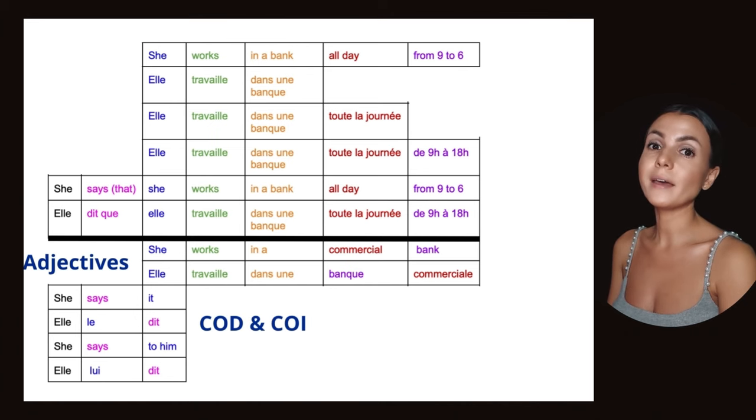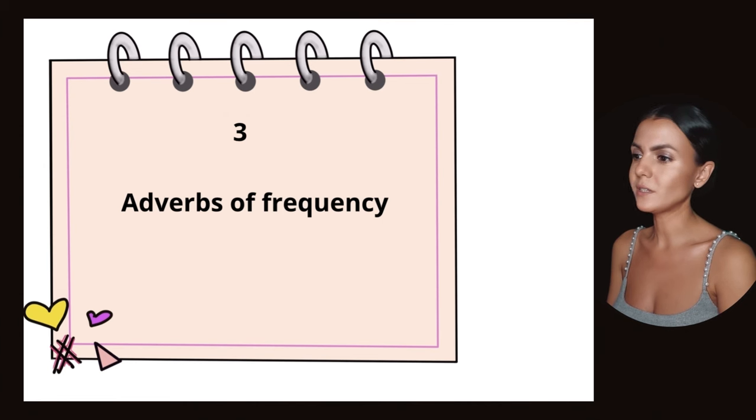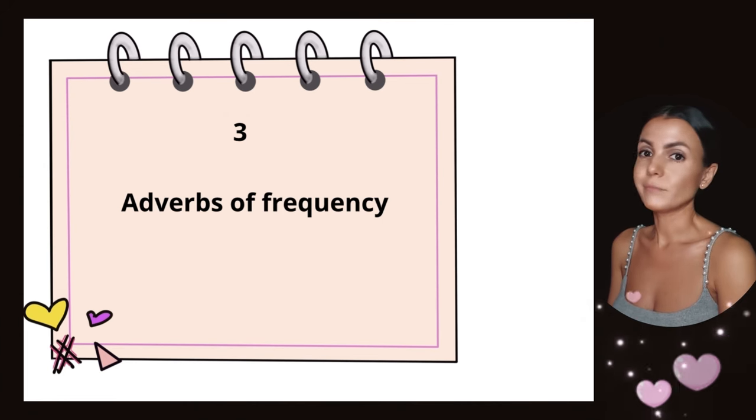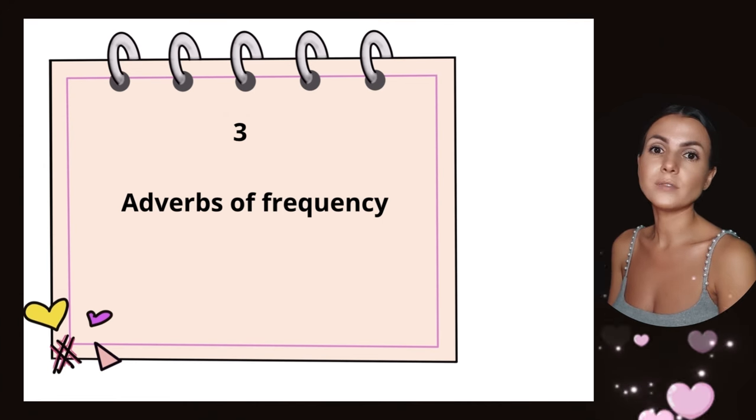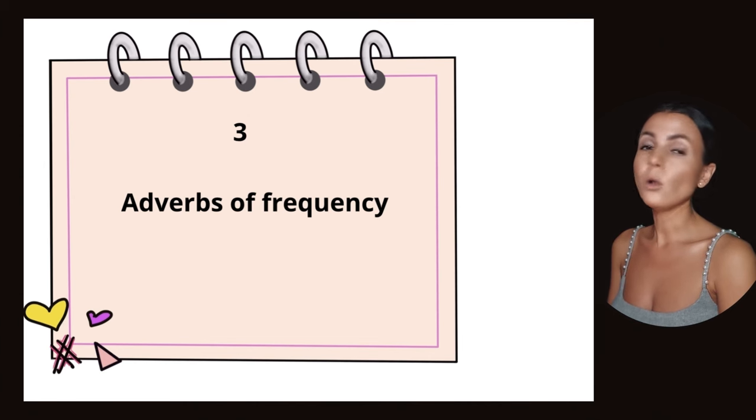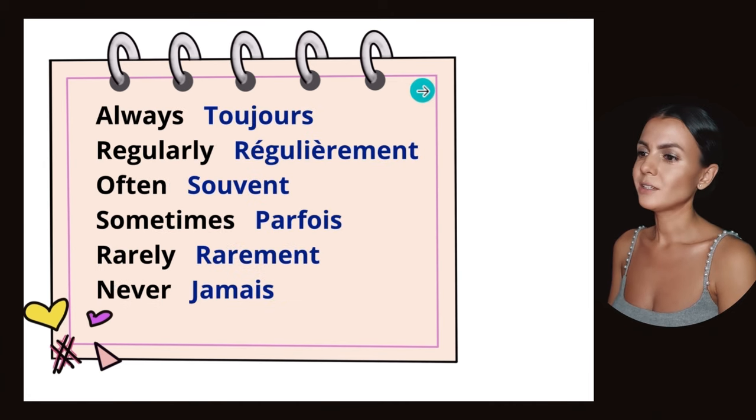And the last case will be adverbs of frequency that you need all the time, so you will learn this very early. It's from beginner level A1. All of this is A1 actually. Adjectives is A1, pronouns is A1 but late A1, and adverbs of frequency is beginner level A1 also.